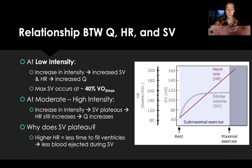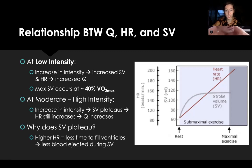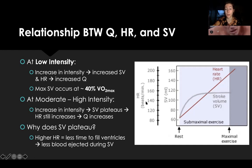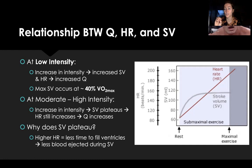The relationship between cardiac output, heart rate, and stroke volume: when you increase exercise intensity, both stroke volume and heart rate go up, so cardiac output also goes up. Max stroke volume occurs at about 40% of your VO2 max — you get a little plateau right there at 40%.